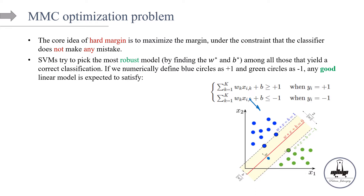SVM — specifically MMC — tries to pick the most robust model by finding the optimal W* and B*. At the end of the day, if we have W* and B*, we can come up with a functional form for f-hat, which is a function of W, B, and X. Then we can make classifications based on this functional form. MMC picks the most robust classifier among all those that yield correct classification.